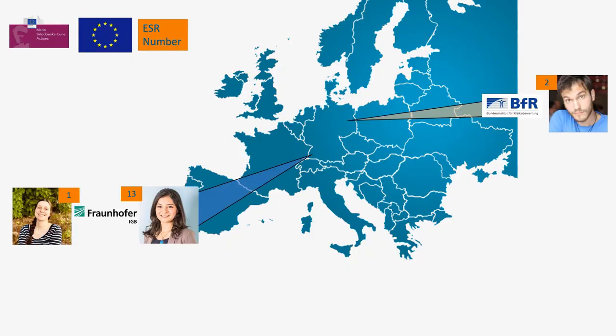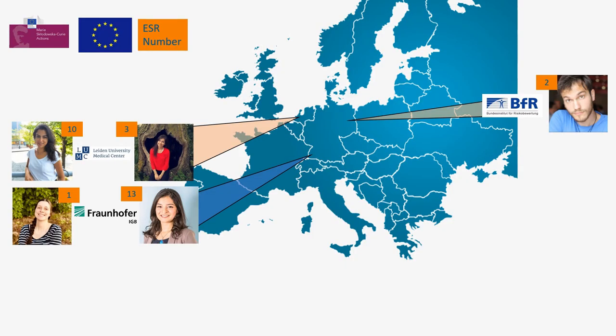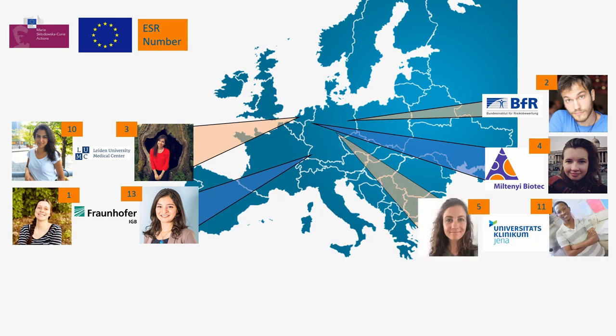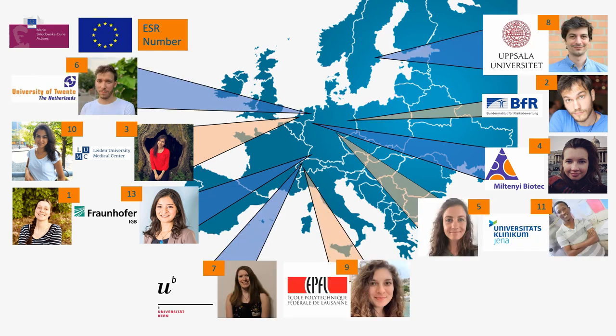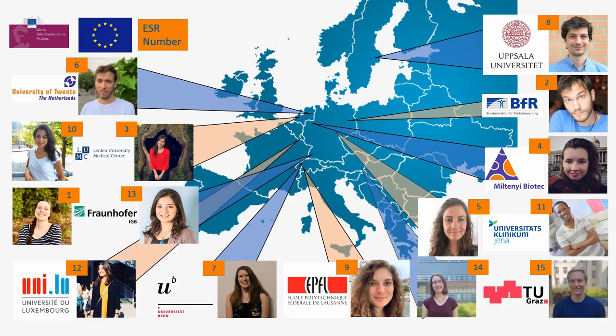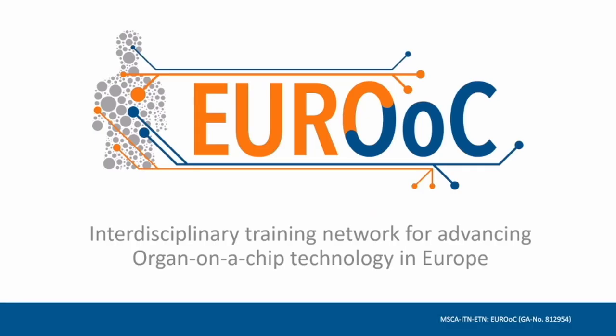We have 15 PhD students working in 11 different institutions across Europe with one common aim, exploring new models to better understand human physiology and disease. Within the European Marie Curie International Training Network, we have been given the opportunity to strive for this aim. Today I would like to show you what our work is about.